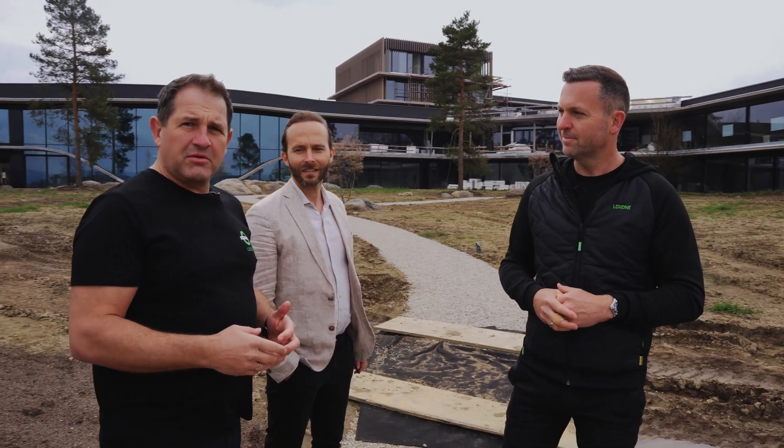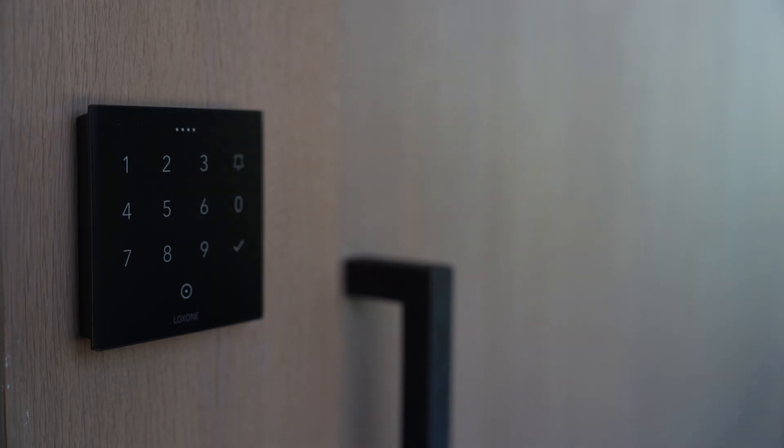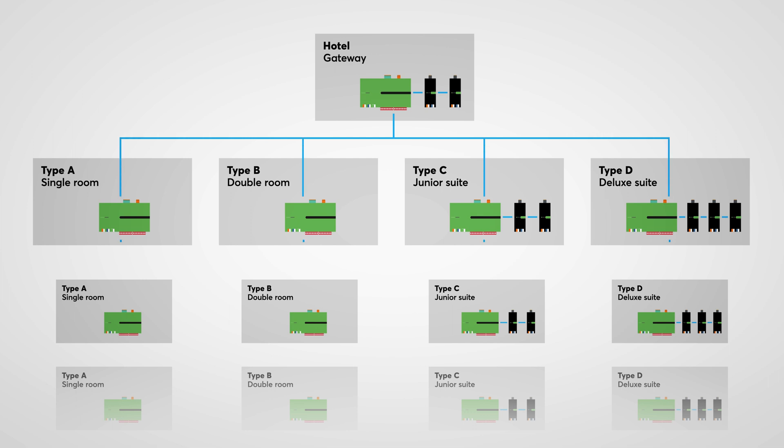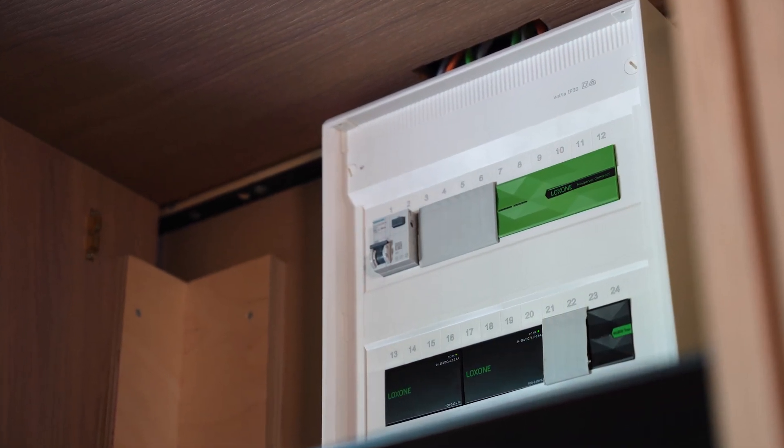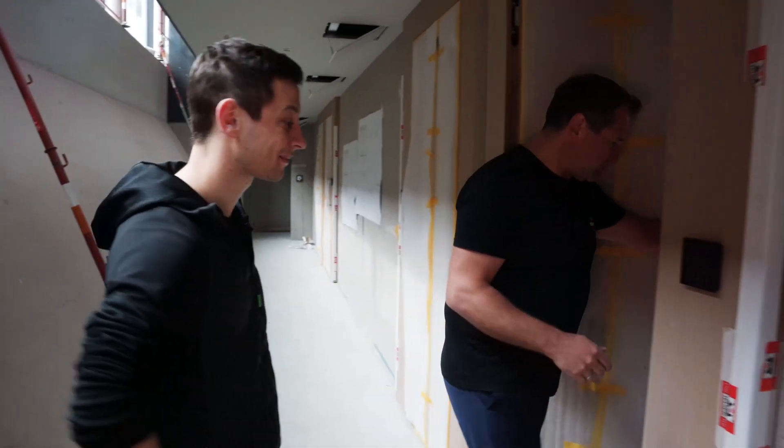Let's now delve into how we've done this in Loxone Config, starting with the entrance to the room. We have a central mini-server in the system that interfaces with the hotel booking system, allowing us to provide guests with their access code or room card in advance. Guests can not only enter their rooms but also gain access to seminar rooms if they have booked a seminar. Once the guest stay is complete, their user information is automatically deleted from the system. We have an NFC CodeTouch installed on the door, which is a standard Loxone product. The topology is set up so that each room's mini-server compact is connected to a higher-level mini-server.